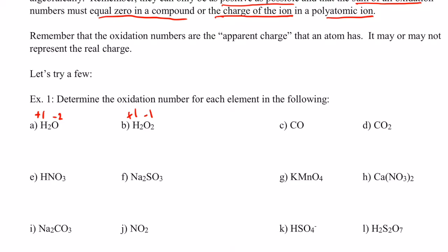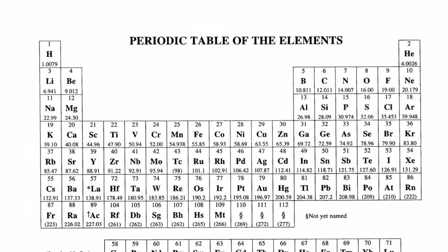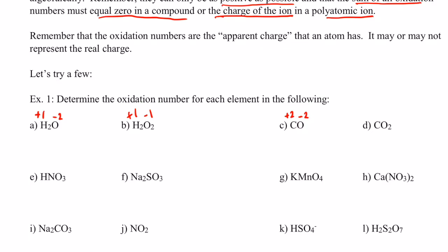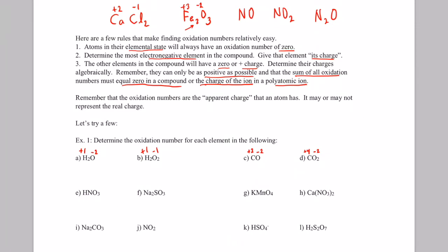For letter c, carbon monoxide (CO): oxygen is the most electronegative at negative two, so carbon must be positive two. Carbon is in group 14 with four valence electrons, so a maximum oxidation number of positive four — positive two is certainly possible. For letter d, carbon dioxide (CO2): oxygen is negative two, and with two oxygens, carbon must be positive four, which is also possible for carbon.